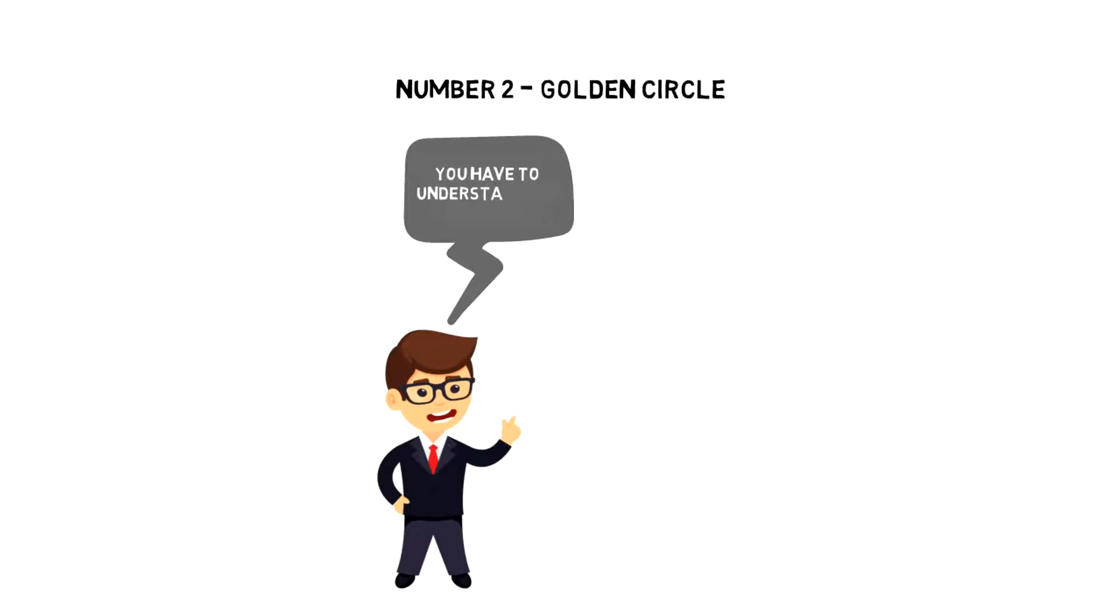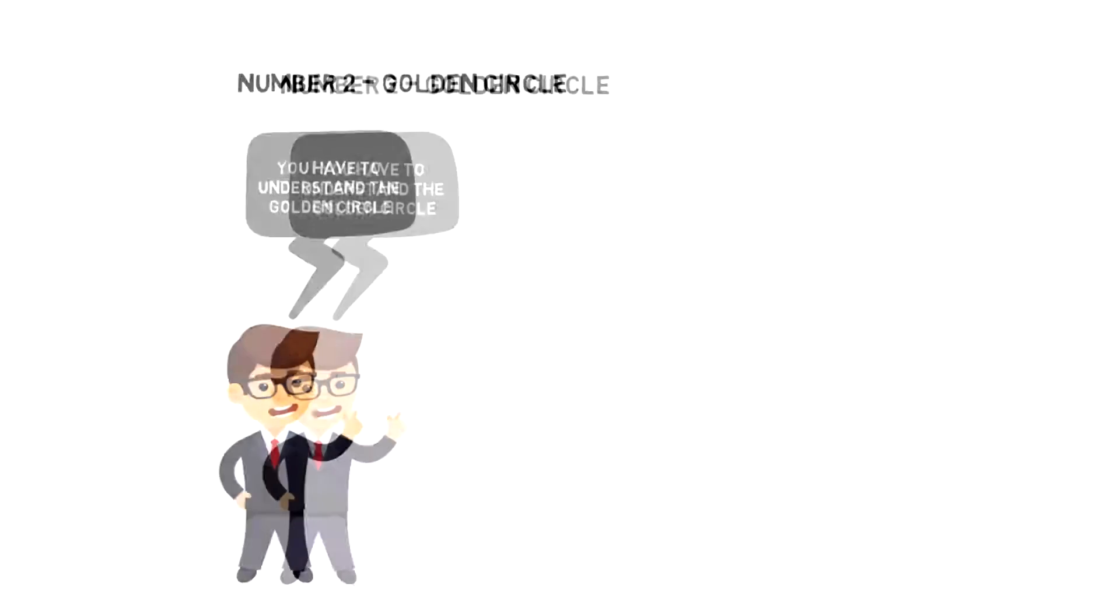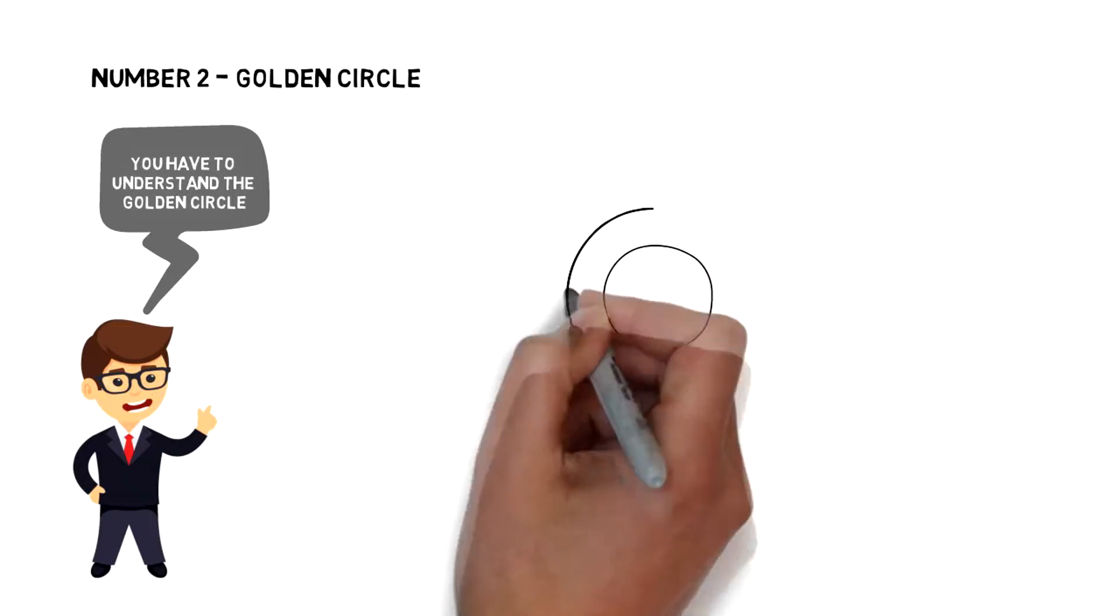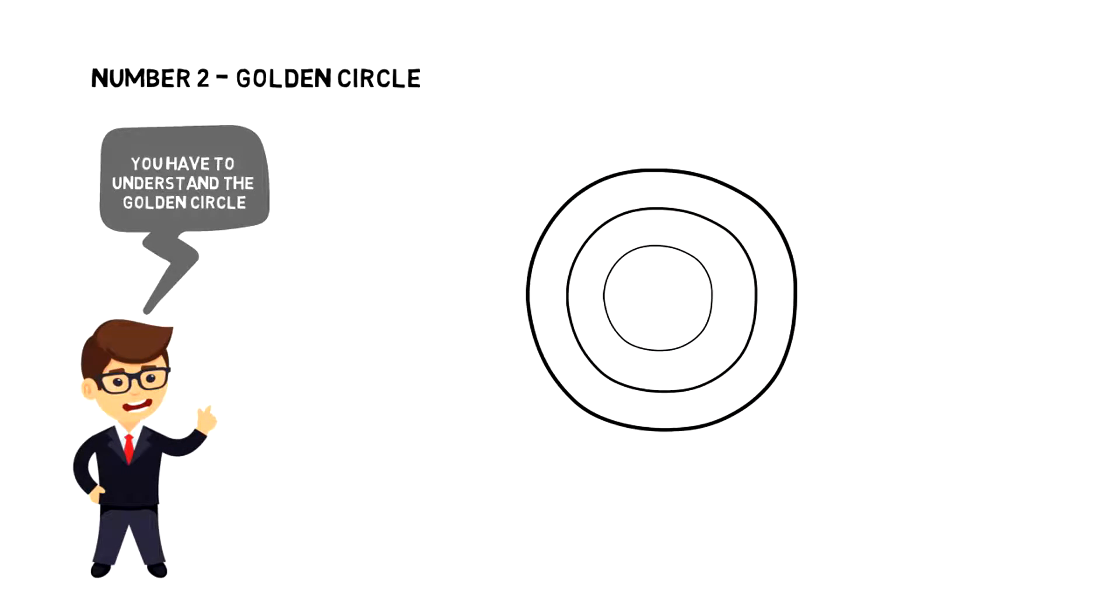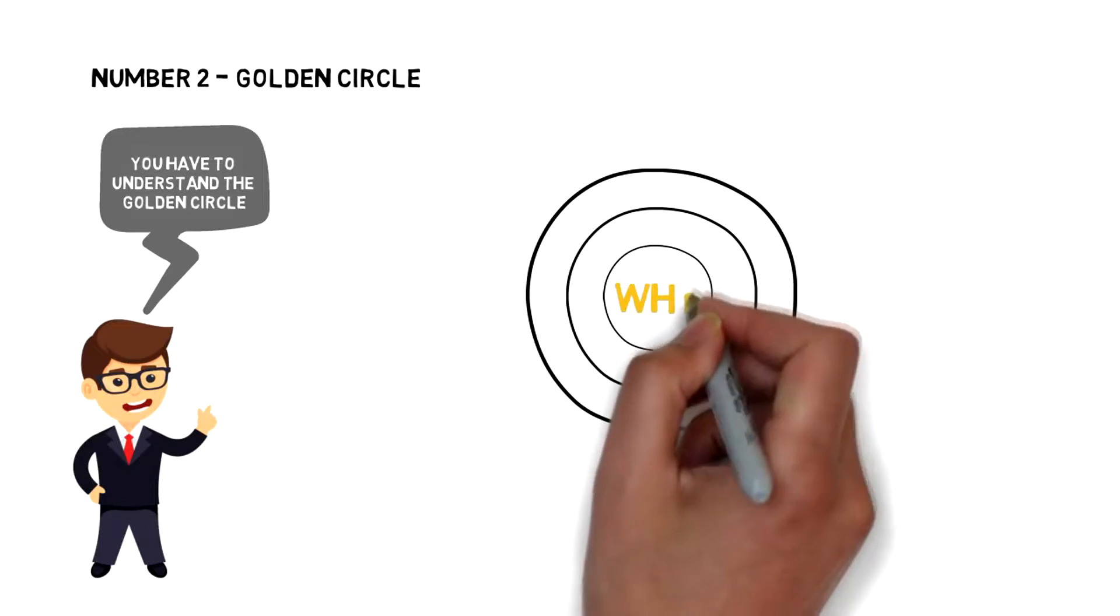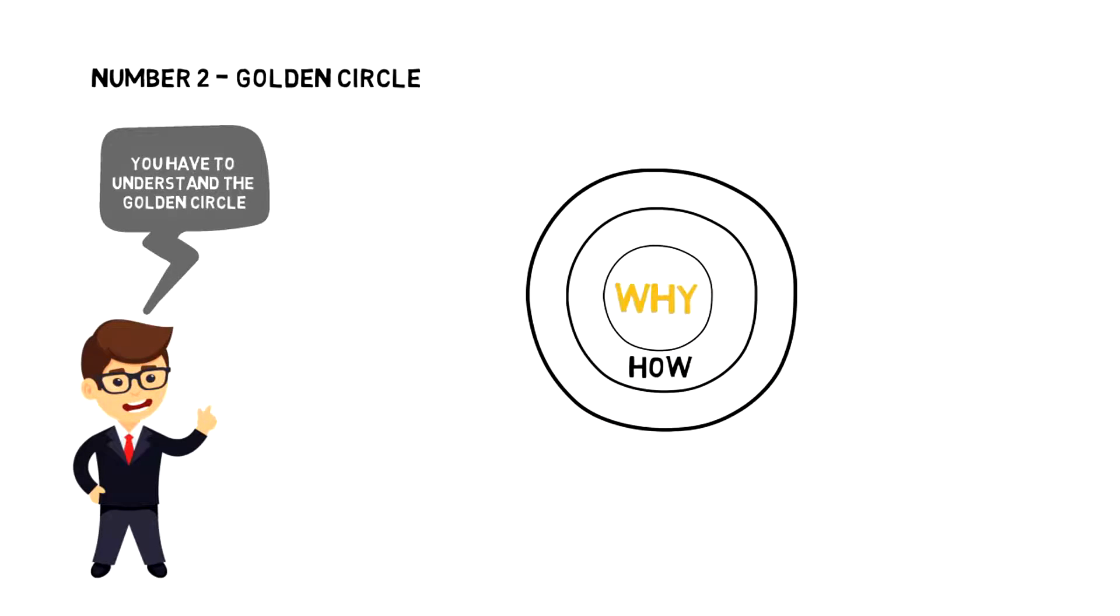Number two. Golden Circle. If you want to understand where the real motivation and meaning comes from, you have to understand the Golden Circle. Golden Circle is formed from three circles, one around another. It starts with why right in the middle, then how around it and what at last. Every organization knows their what. These are the products that they sell or services that they provide.